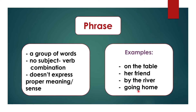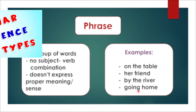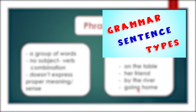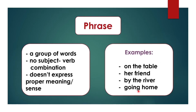By the way, if you do not know what is called a subject or what is called a verb, you can check my video on sentence, and I hope your idea about subject and verb will be clear. So if we consider all these four examples, it is clear that these are called phrases because these are a group of words with no subject-verb combination, and they do not express any proper meaning or make any kind of sense.